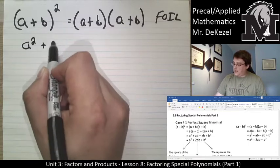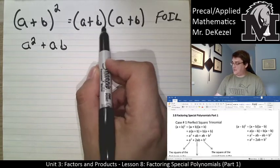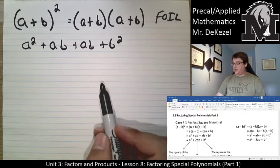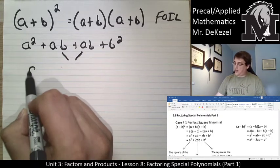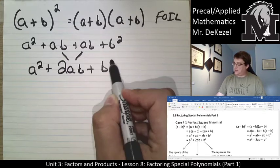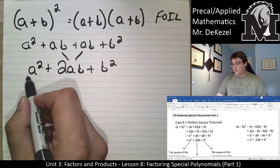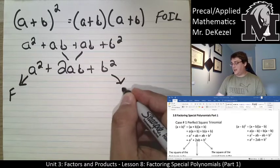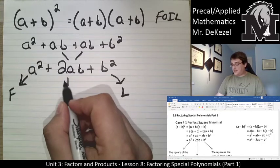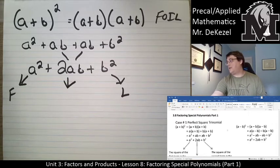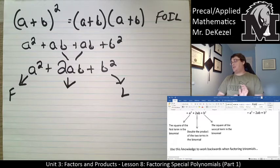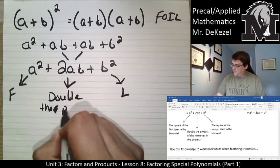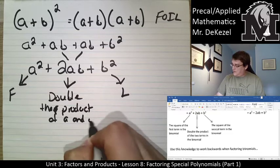We would have a squared, plus ab for the outsides. For the insides we would have ba — so again that's ab. And then we would have b squared. These we know can combine because they're like terms. So we actually have a squared plus 2ab plus b squared. We're very familiar with a squared being the first term and b squared being the last term. But the middle term is double the product of the two terms that are in the binomial — it is double the product of a and b.